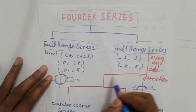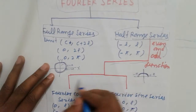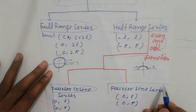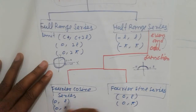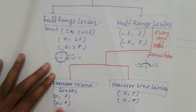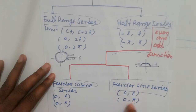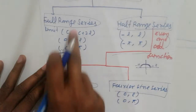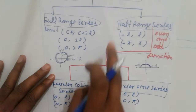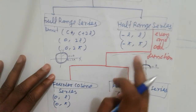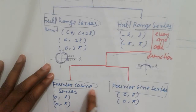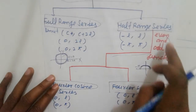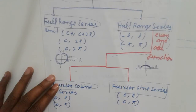Half-range series is also divided into two parts: Fourier cosine series and Fourier sine series. In that case, the limit is 0 to L or 0 to pi. So the total representation of Fourier series is: full-range and half-range, where half-range is also divided into Fourier cosine series and Fourier sine series. When a problem is a half-range series, first check for even or odd, then find the solution; otherwise, apply the general method.